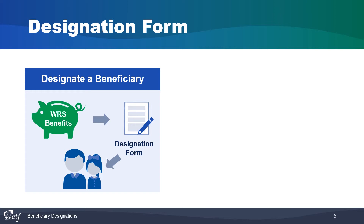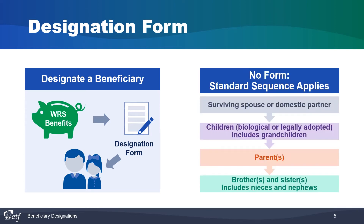In order to make sure the right people receive your benefits, you must designate a beneficiary by completing one of ETF's designation forms. Benefits are always paid based on the most recent and valid beneficiary designation received at ETF before your death. Benefits will not automatically be paid according to your last will and testament. If you do not complete a form, standard sequence is applied.